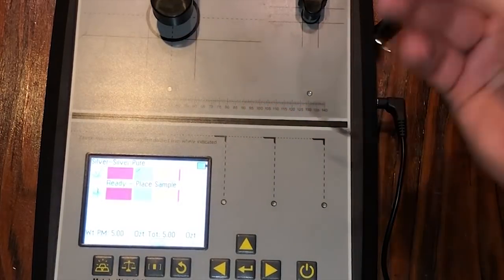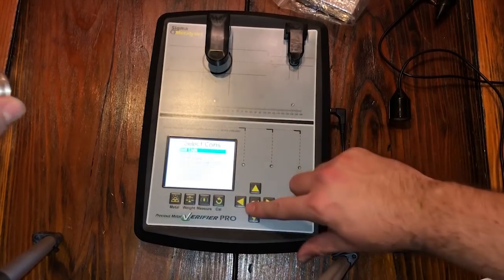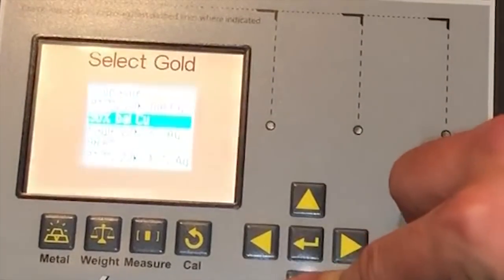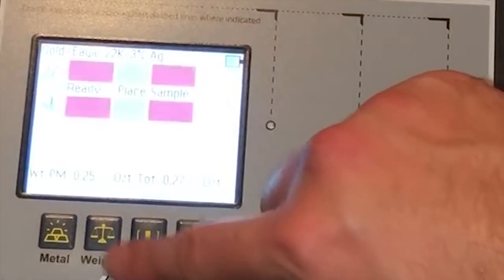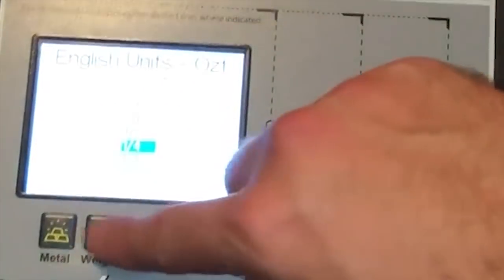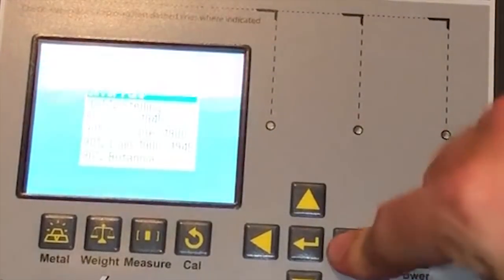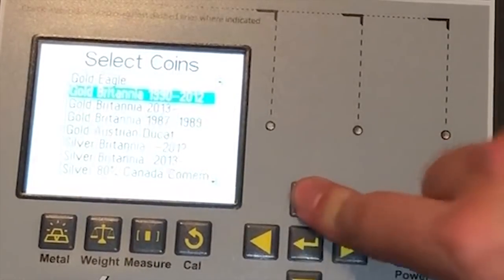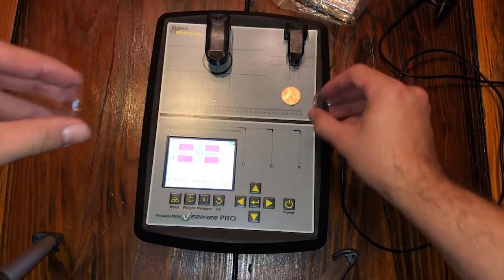Now we're going to do gold. You can come over here to gold and you can select gold, the different types. We're going to say eagle, we're going to say weight, we're going to do quarter ounce. Actually you can come here metal and you can come over to coins and you can pick it. It is a gold eagle so we could even pick it there. Now we're going to dump this out.